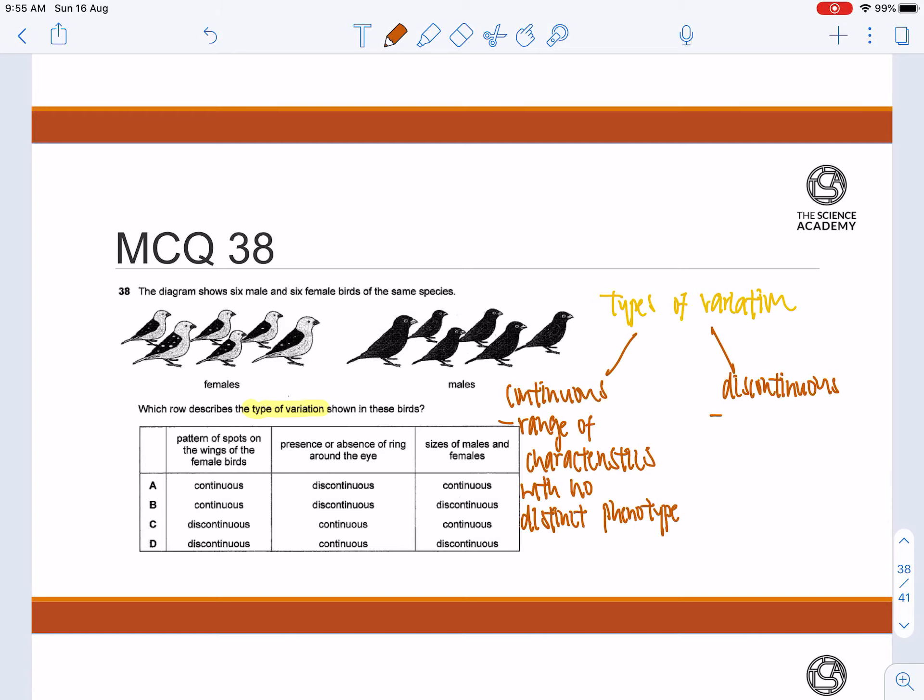Whereas discontinuous variation, basically it's discrete phenotypes. It's essentially not within a spectrum. There is no range to it.